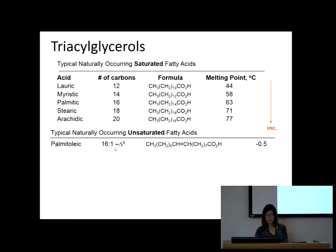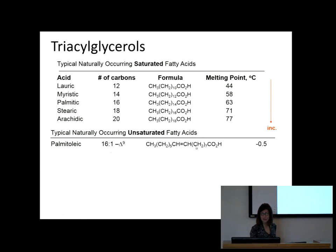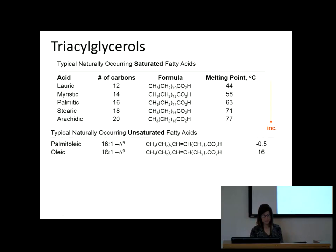With the double bond we use a numbering system: we indicate the number of carbons, the number of double bonds, and a delta with the carbon number where the double bond is positioned. For a 16-carbon chain with one double bond starting at carbon 9 — the acid is always carbon 1, then seven CH₂ groups, making carbon 9 where the double bond starts. A longer chain increases the melting point, but it's still way lower than that of the saturated version.